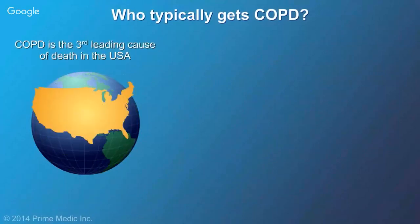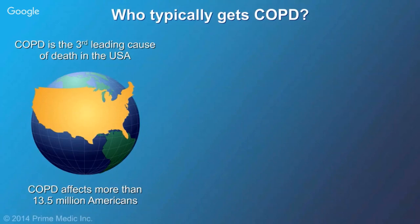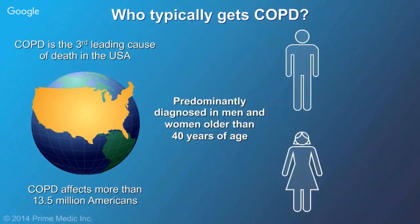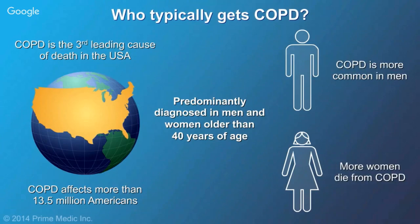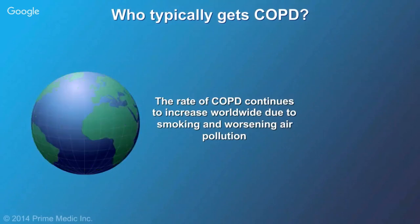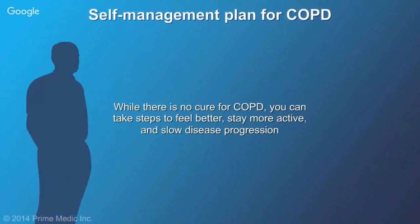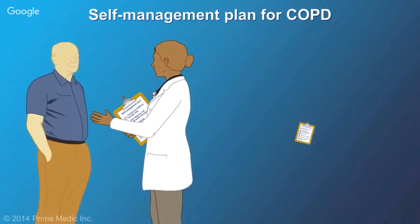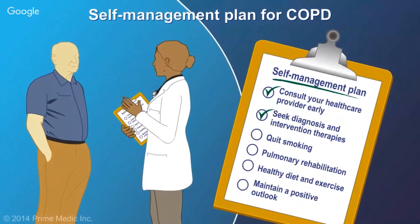COPD is the third leading cause of death in the United States and affects more than 13.5 million Americans. It is predominantly diagnosed in people over 40 and affects both men and women, though more women die from it each year. While there is no cure, COPD can be managed through quitting smoking, pulmonary rehabilitation, healthy eating and exercise, and maintaining a positive outlook.